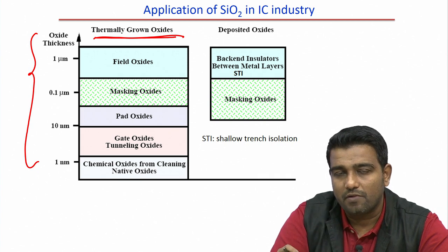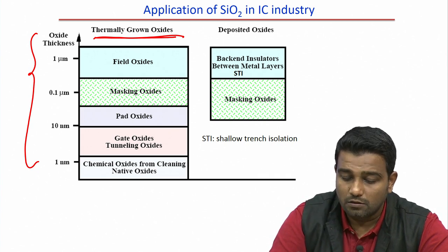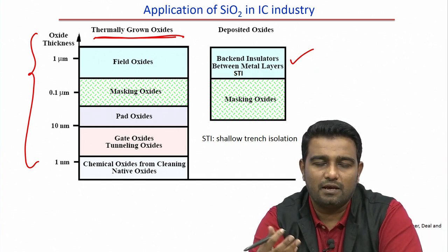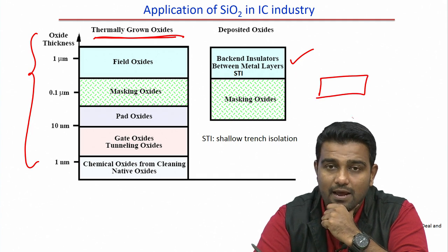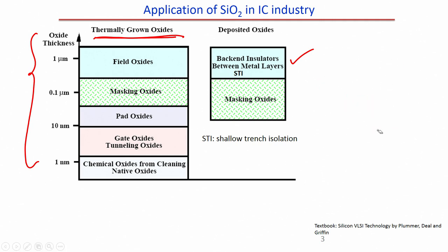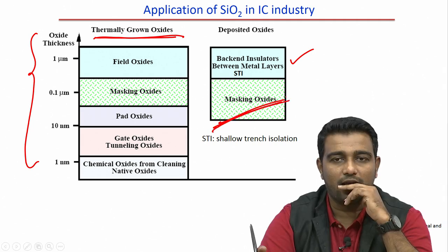If I want to deposit the oxide, one application is back-end insulators between metal layers — for example, if I have one metal layer and another metal layer and I want separation, I separate them with oxide material so it acts as an insulating layer between two metal layers. Another use of deposited oxide is again as masking oxide.